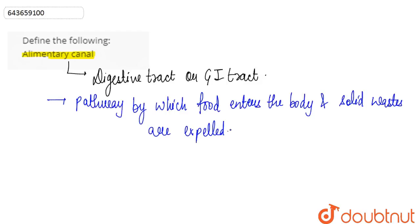So this complete long tube - the alimentary canal is a long tube of organs that runs from mouth to anus. An adult digestive tract is about 30 feet long, and digestion begins in the mouth well before food reaches the stomach.